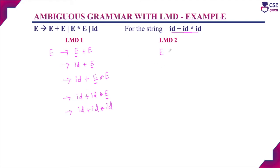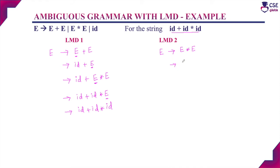For the second leftmost derivation, we apply the production E → E * E. Choose the leftmost non-terminal and apply the production rule. For this leftmost non-terminal E, we apply E → E + E.